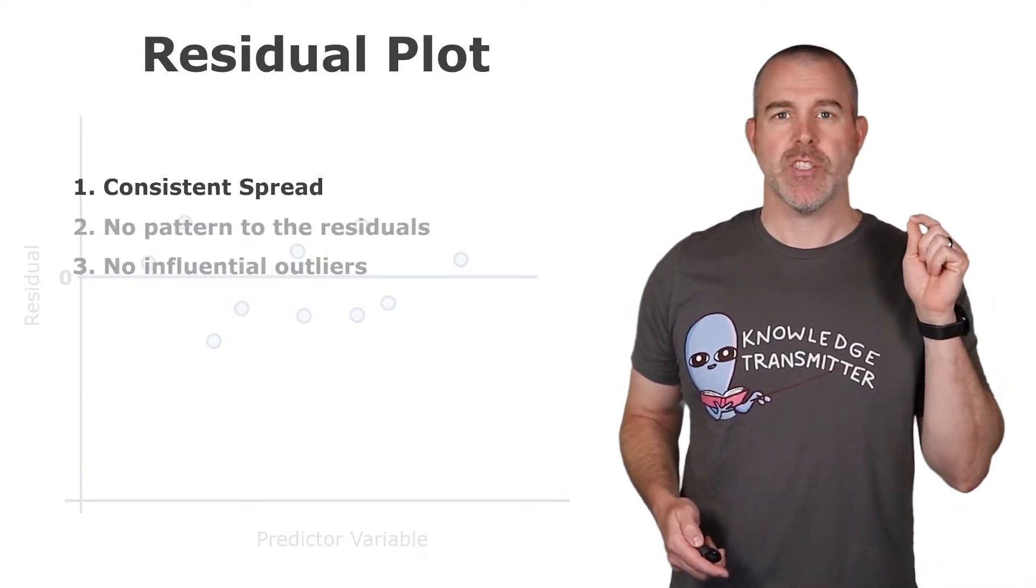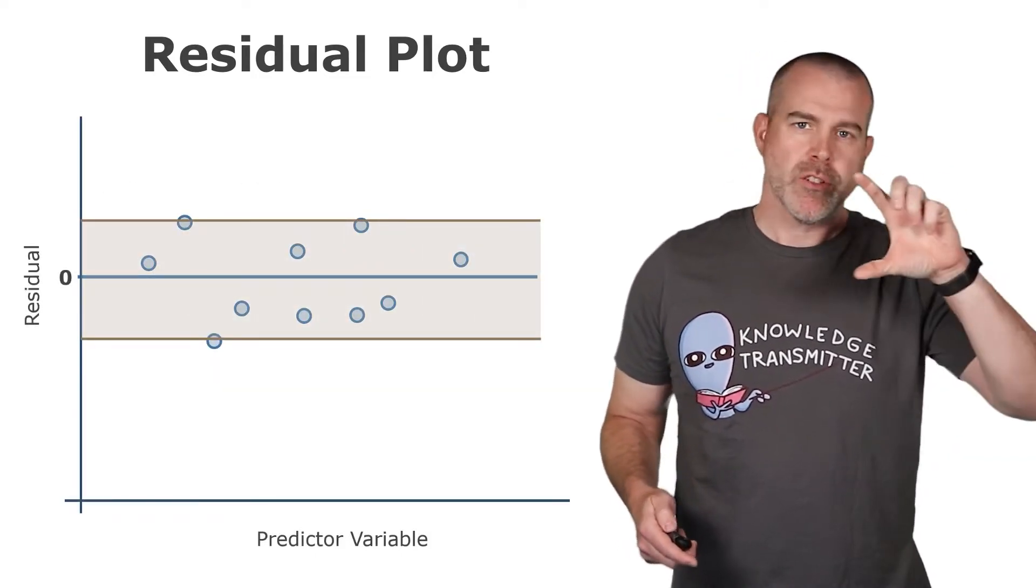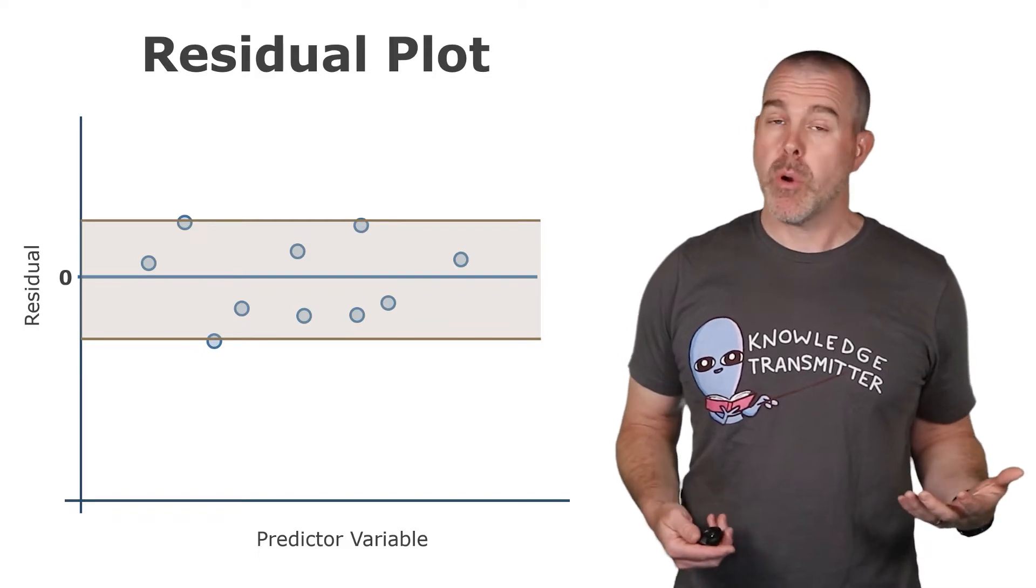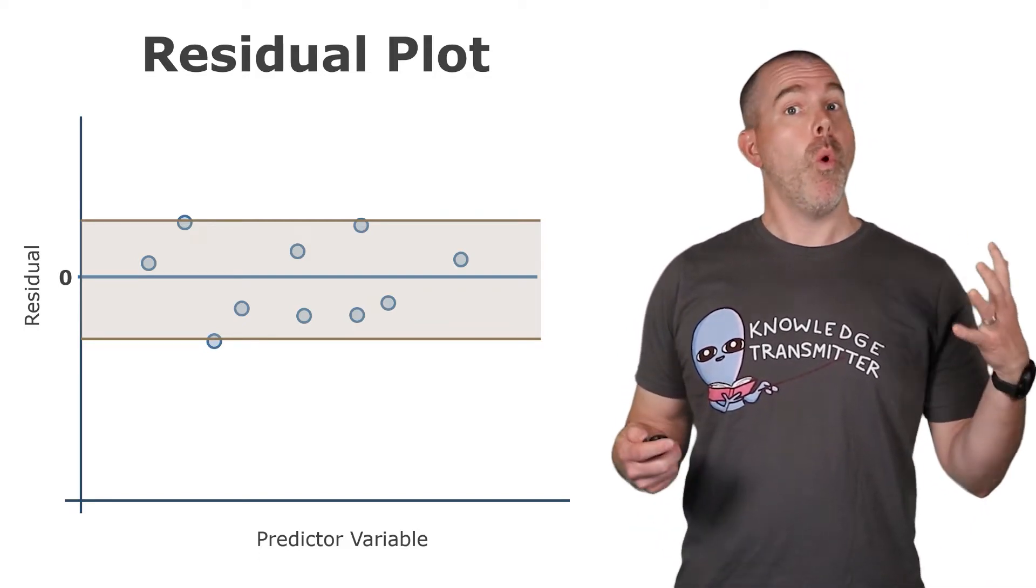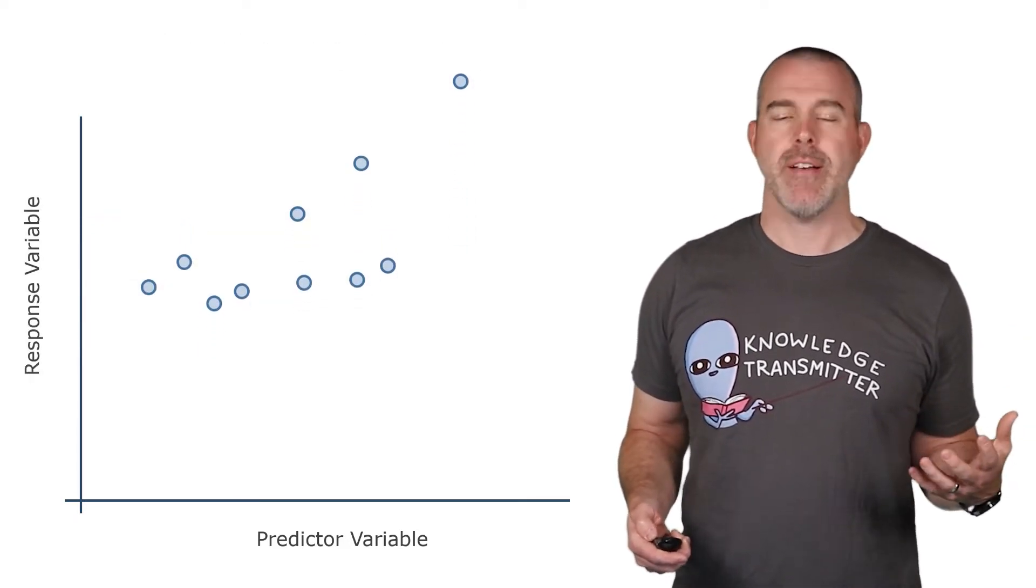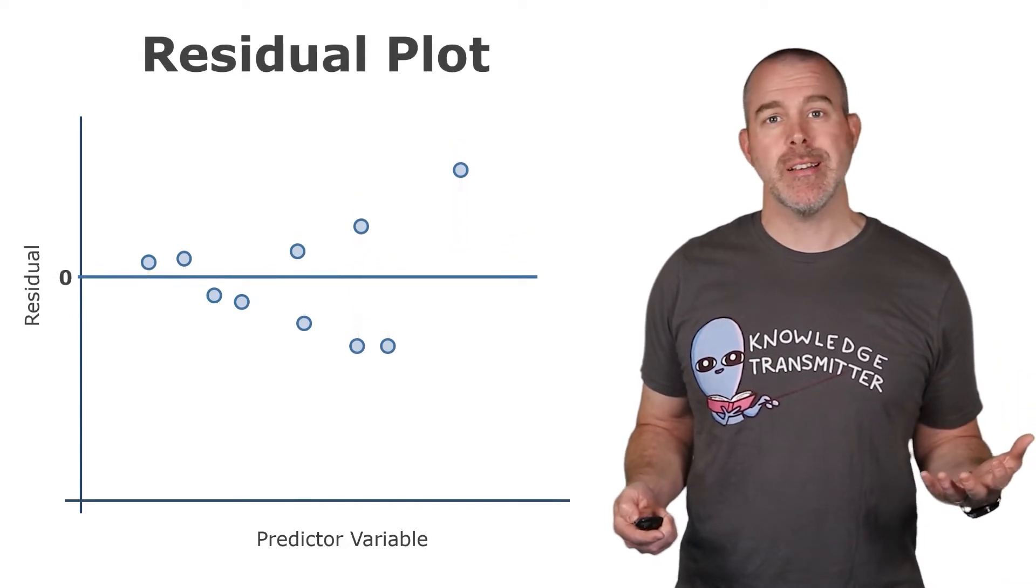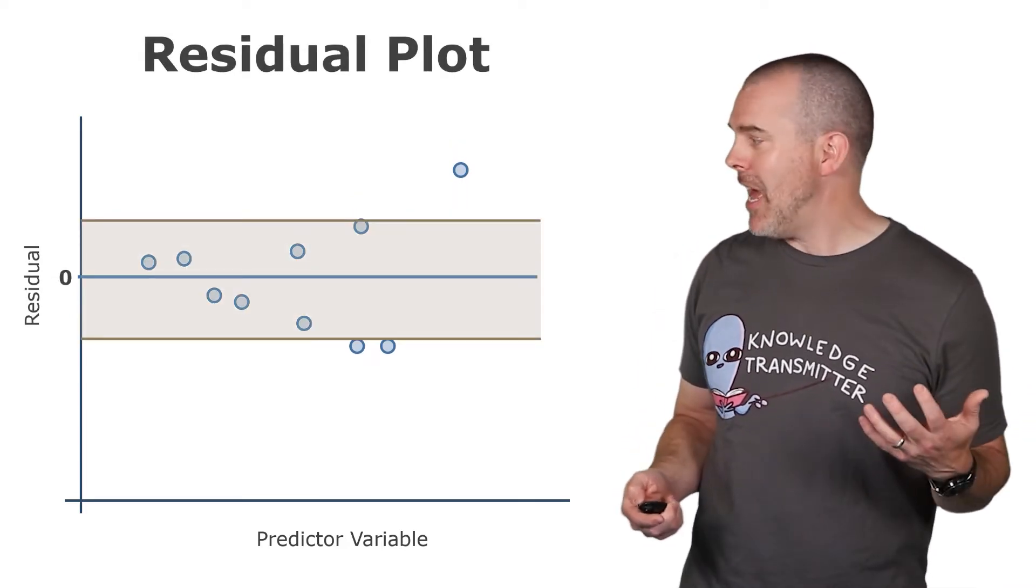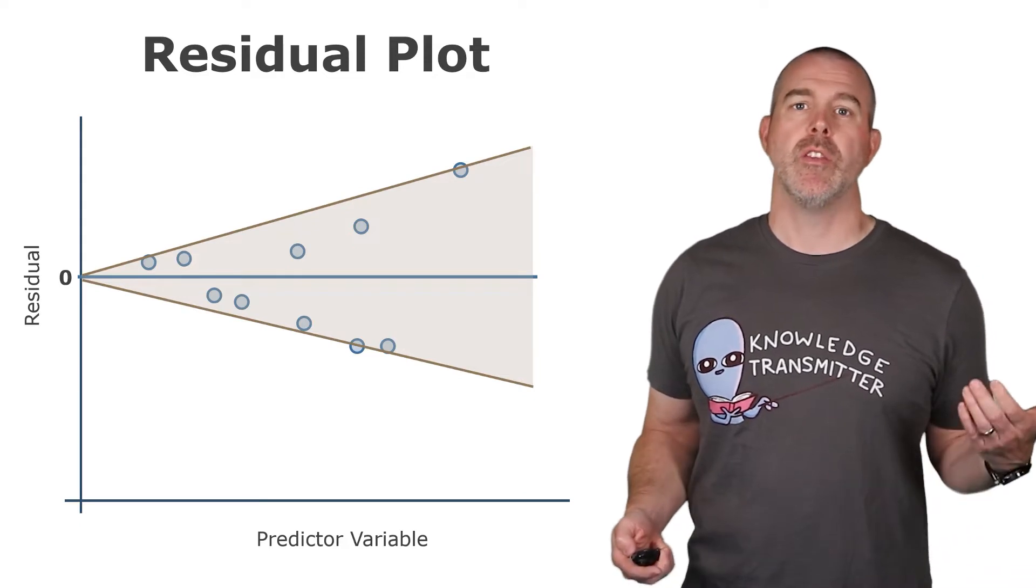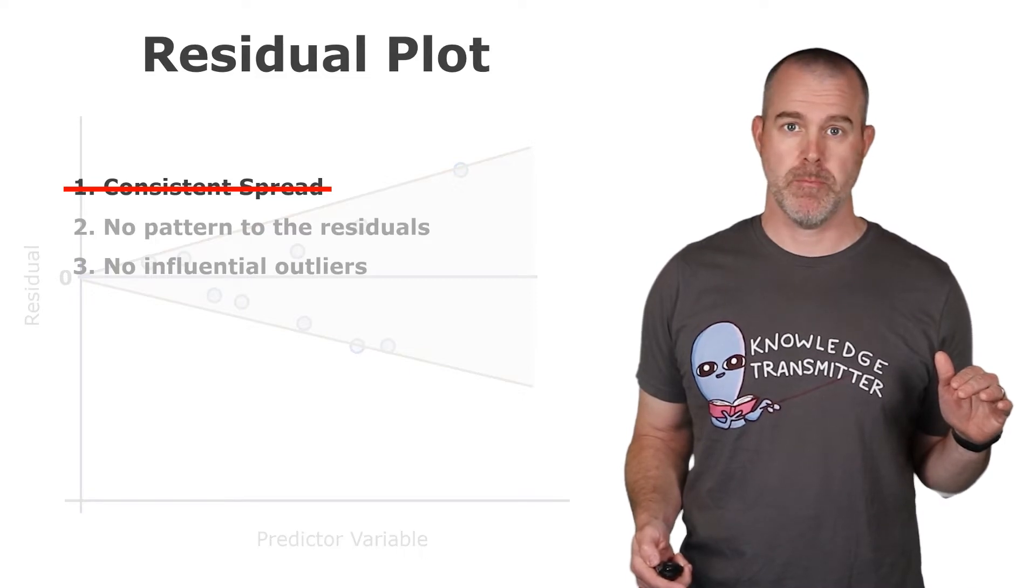Let's dive into the first one here, consistent spread. We must have a consistent spread. If you look at this example, they're all pretty much equally spread across the graph. What might it look like if we don't have a consistent spread? Here's our original data. If we make the residual plot, now it actually looks like it starts to spread out. As the x values increase, the residuals actually increase. So this one does not have consistent spread.